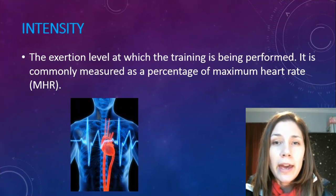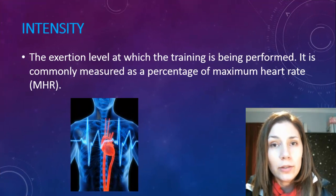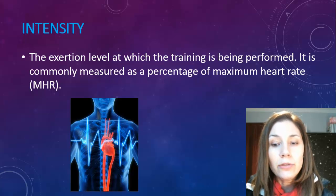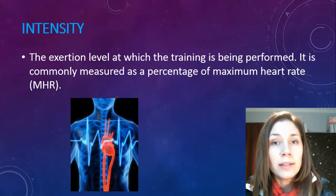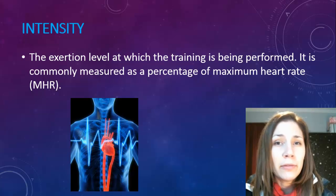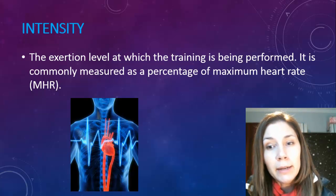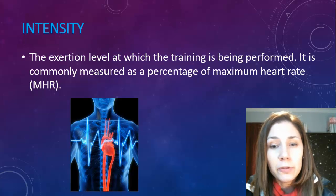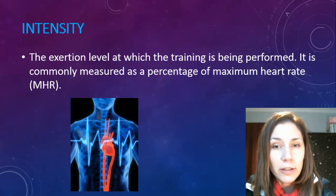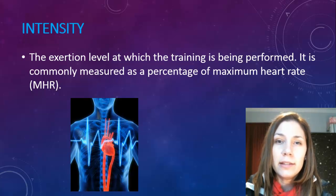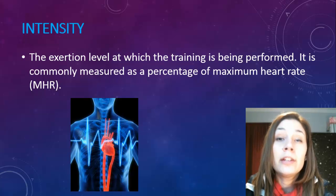Intensity is basically how intense your training sessions are throughout the program, and it's normally measured as a percentage of maximum heart rate. Anything between 70 and 85% max heart rate will be aerobic; 85 to 95% would be anaerobic; and 95% and above is the highest intensity, using the ATP-PC energy system.